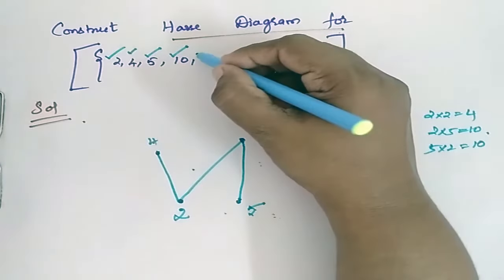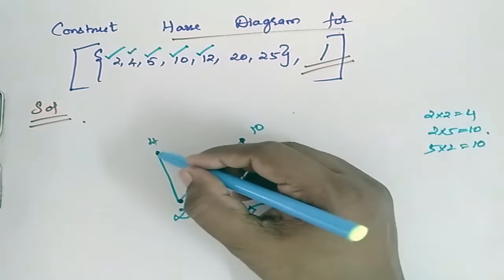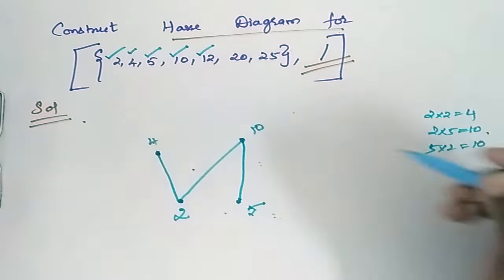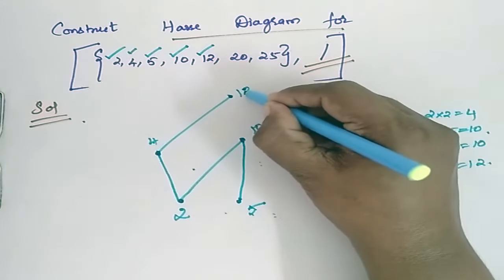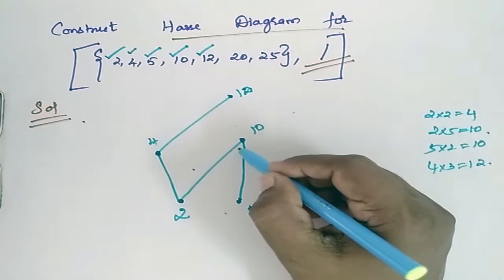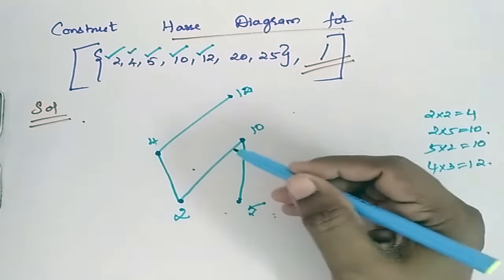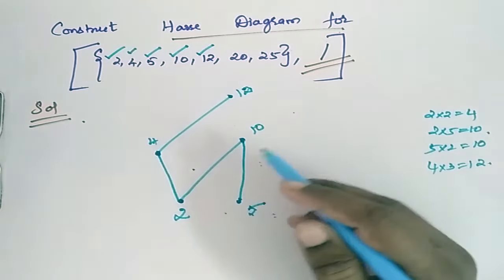Then it is 12. Now when I go for 12, check out with the 4. 4 divides 12, yes. 4 3 serve 12. So you will have 12 here. Then check out with 10. Whether 10 divides 12, no. 5 divides 12, no.